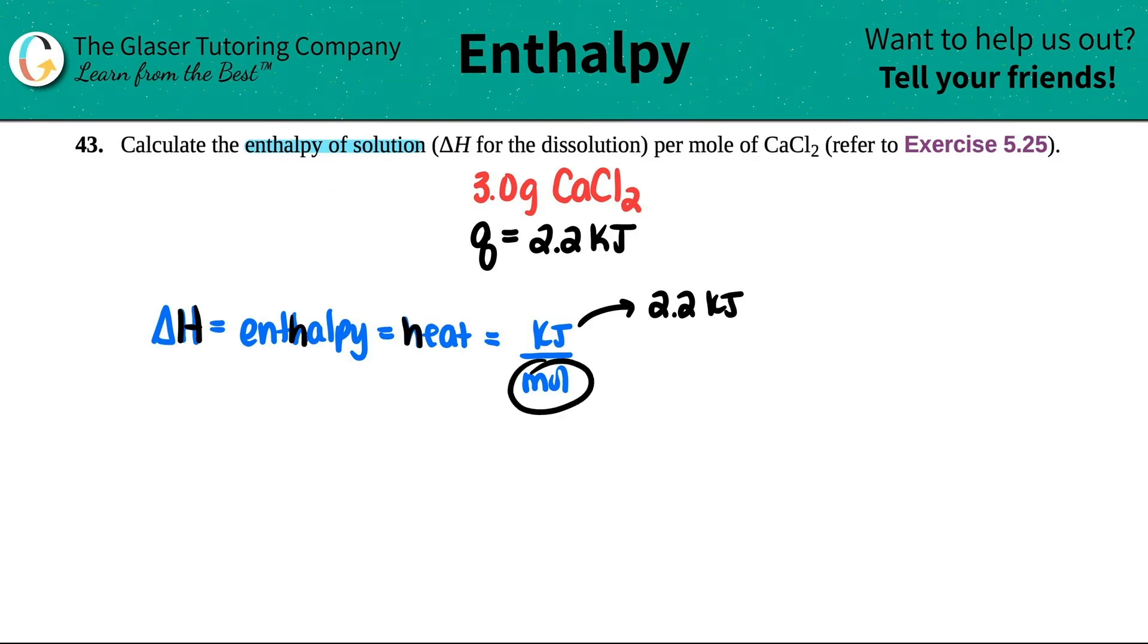But now we got to find out the moles. Well, they told us that there was 3.0 grams of the calcium chloride. So how do I go from grams to moles? That's so easy, right? That's so like first test. All we got to do is convert. So 3.0 grams of the calcium chloride, multiply by the ratio, throw the unit that you don't want on the other side. So grams of CaCl2 is going to go on the bottom. We want to convert to moles of CaCl2.